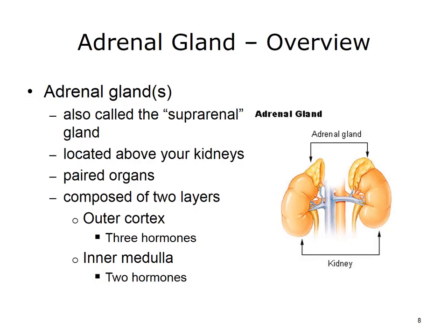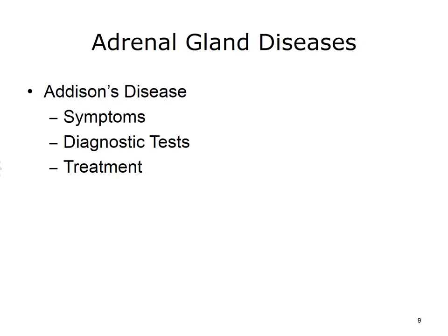The adrenal medulla secretes two hormones responsible for physiological changes that enable us to respond to and react to stress. One example of an adrenal gland disorder is Addison's disease, also called adrenal insufficiency, adrenocortical hypofunction, and hypocortisolism. Addison's disease occurs if the adrenal glands don't make enough of the hormones that help your body respond to stress, regulate blood pressure, and regulate water and salt balance. It can be caused when problems with the immune system lead it to attack its own tissues, causing damage to the adrenal glands.